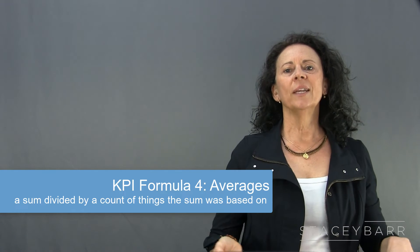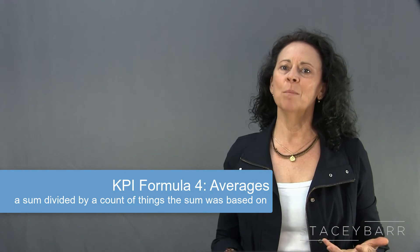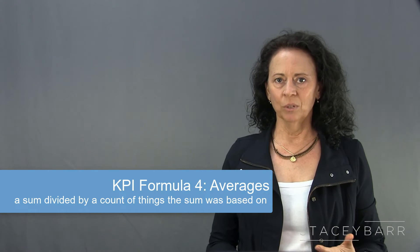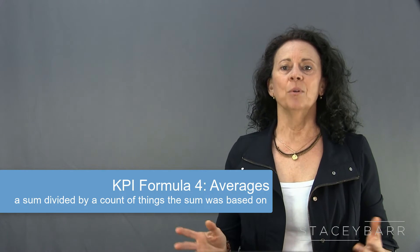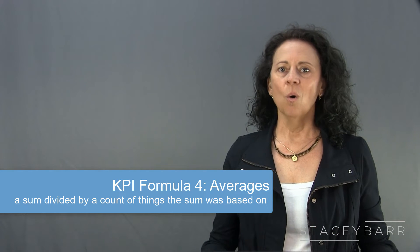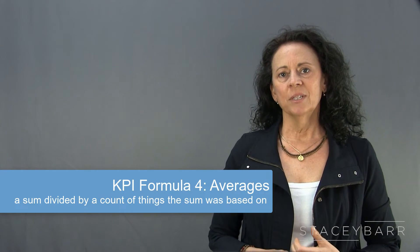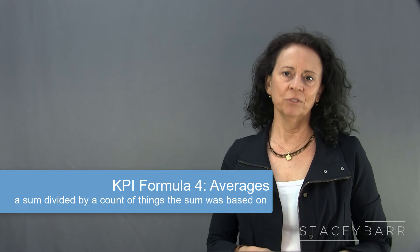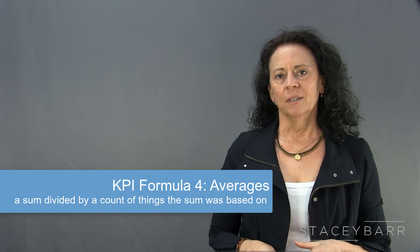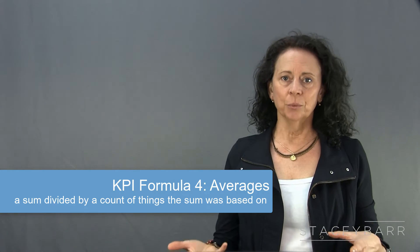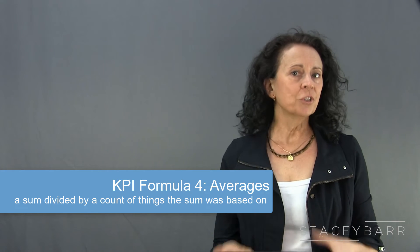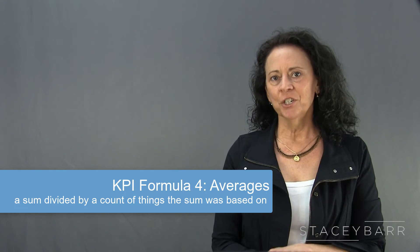Basic KPI formula number four is the average. An average is usually a sum or total divided by a count of things or people that the sum was based on. For example: average customer satisfaction rating, average days lost due to injuries per employee, average sales revenue per sales call, or average cycle time of delivery. When you're interested in understanding the overall level — the degree or extent to which a particular result is happening, and not just whether or not it's happening — then averages are the way to go. The three main limitations of using averages are: one, small populations; two, outliers; and three, asymmetrical or skewed distributions.